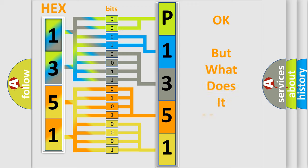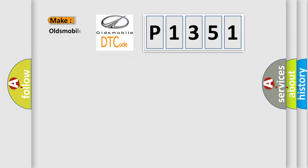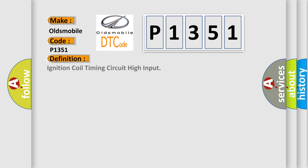We now know in what way the diagnostic tool translates the received information into a more comprehensible format. The number itself does not make sense to us if we cannot assign information about what it actually expresses. So, what does the diagnostic trouble code P1351 mean? The basic definition is: Ignition Coil Timing Circuit High Input. And now here is a short description of this DTC code.